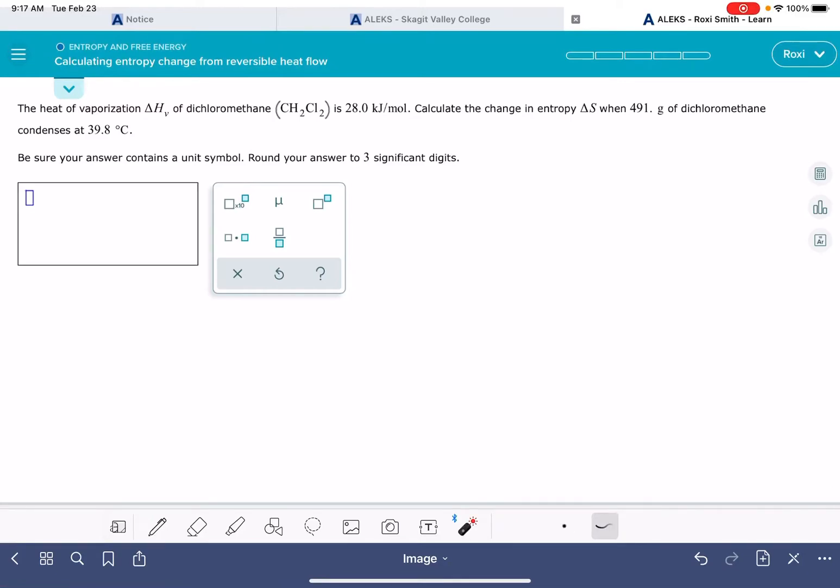In this video, I'll show you how to solve the Aleks problem called calculating entropy change from reversible heat flow. For this problem, we've been given the value of delta H for a particular process, and we're being asked to calculate the change in entropy for that process.